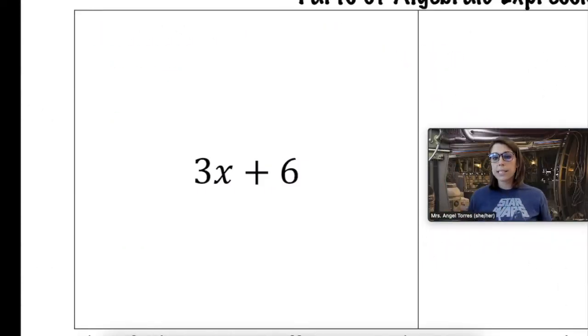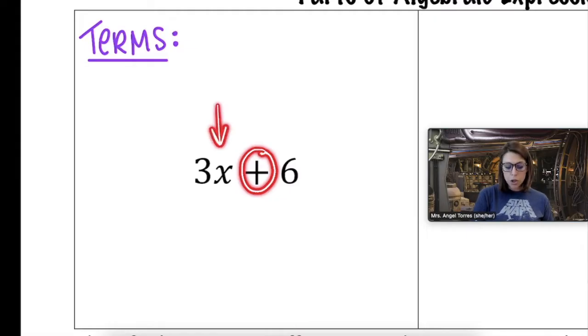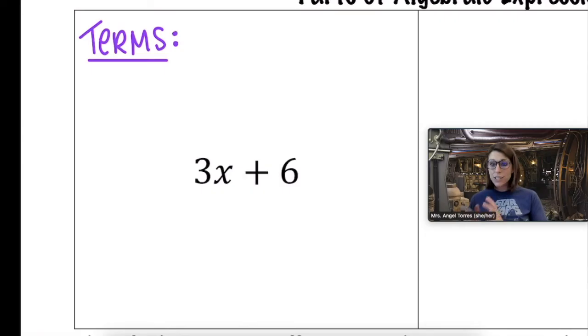Starting with 3x plus 6, the first thing I like to do is figure out how many terms are in the expression. Remember terms are separated by addition and subtraction signs. So I notice that there's only one addition symbol here, meaning there are two terms in this expression. 3x is a term and 6 is a term.